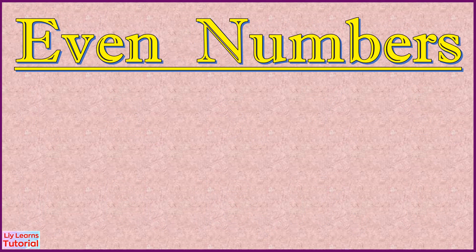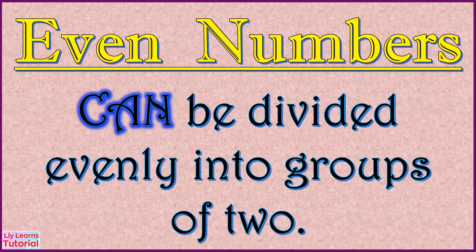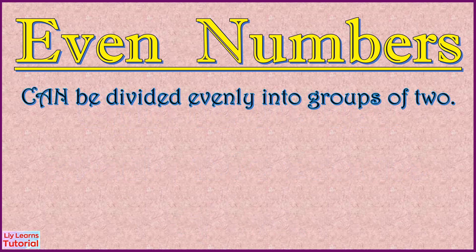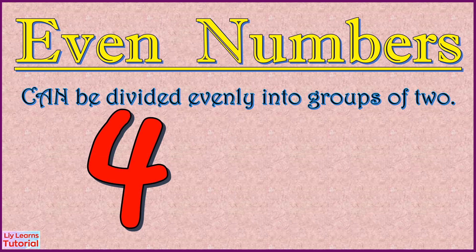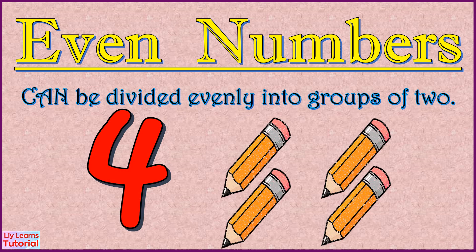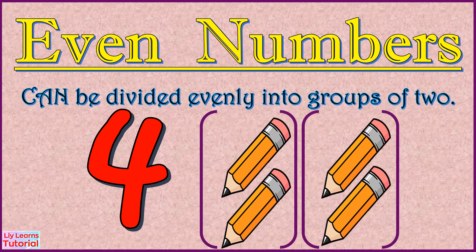Moving on to even numbers. These numbers can be divided evenly into groups of two. Let's take number four as an example. We can divide it evenly into groups of two. There are only two groups of two and no groups of one, so that makes it an even number.